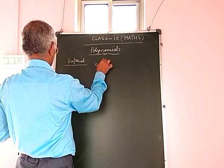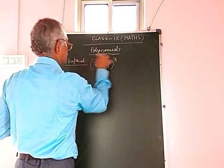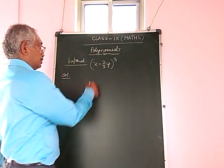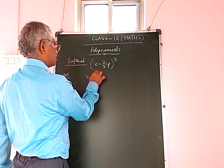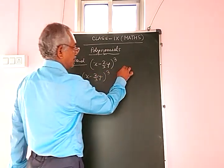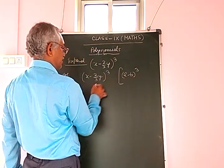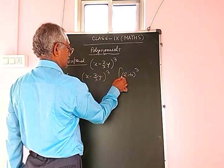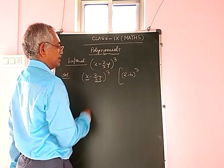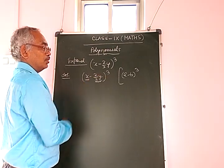Now expand: (x - 2/3·y)³. Comparing with (a - b)³, we find that at the place of a is x, and at the place of b is 2/3·y. So this is in the form of (a - b)³.